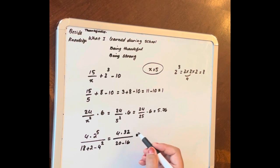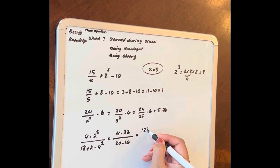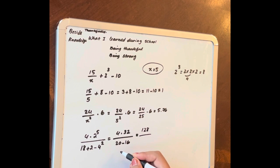So 4 times 32 with calculator, 4 times 32 is equal to 128 over 20 minus 16, 4.